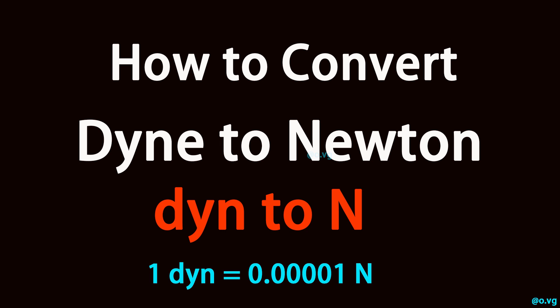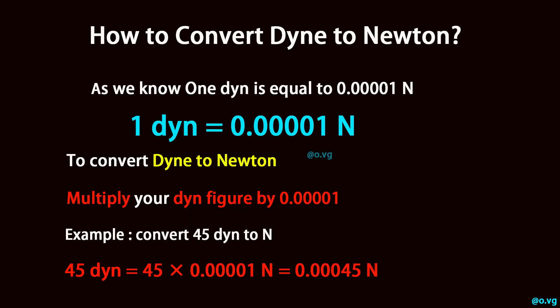How to convert dyne to newton. As we know, one dyne is equal to 0.00001 newton. To convert dyne to newton, multiply your dyne figure by 0.00001.